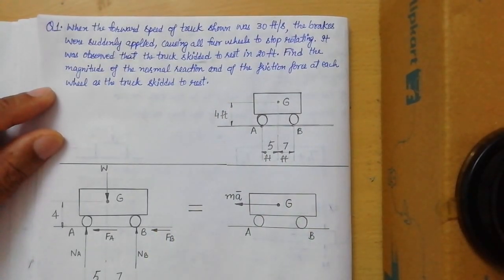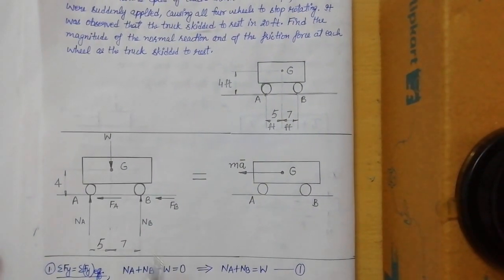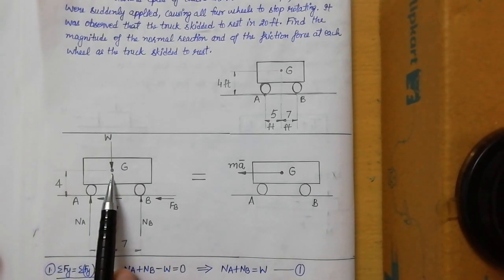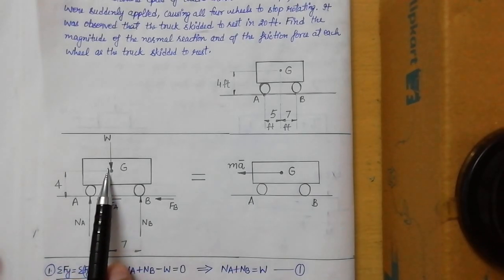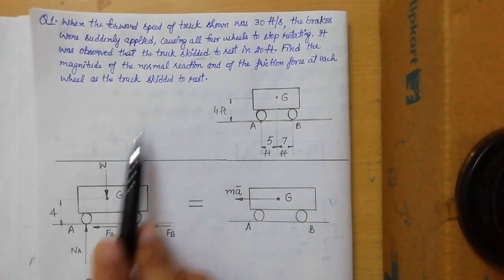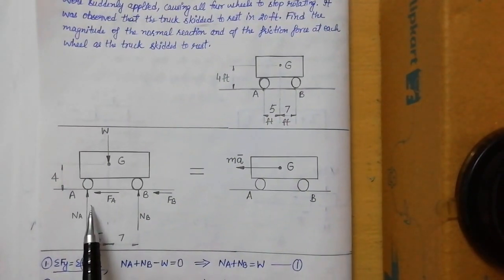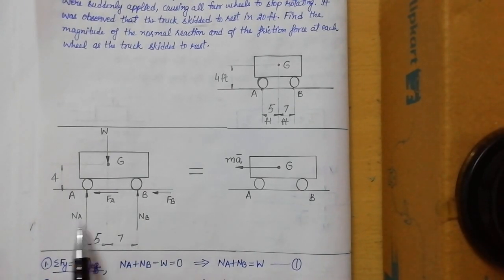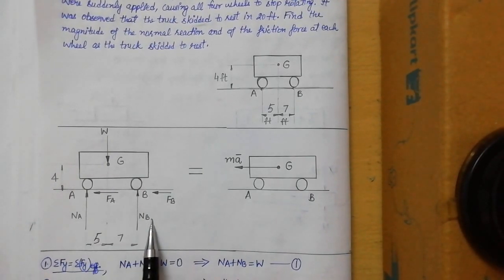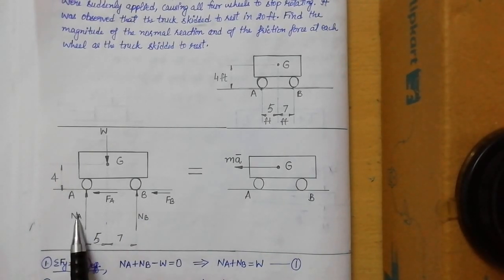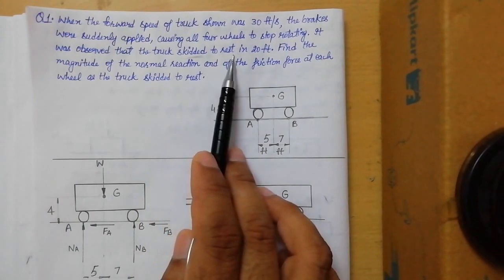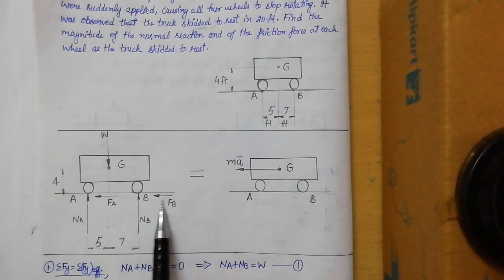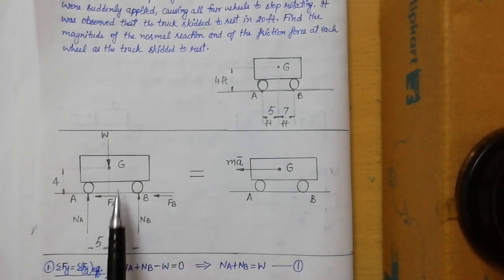The first step is to draw the free body diagram. Represent the truck and the surface. The first force is the weight W acting downward at the center of gravity. At the rear wheels and front wheels, we assume reactions NA and NB respectively — NA is the reaction for both rear wheels and NB is for both front wheels. Since the truck skidded, friction forces FA and FB also act on both wheels, directed towards the left, opposite to the truck's motion.